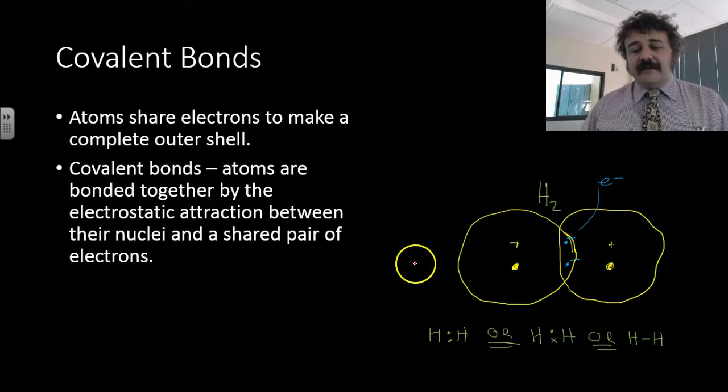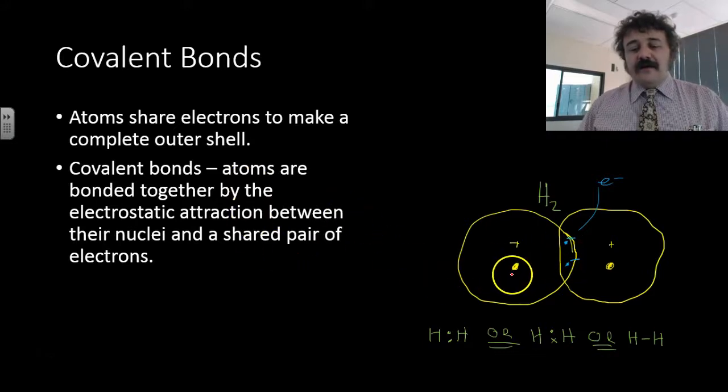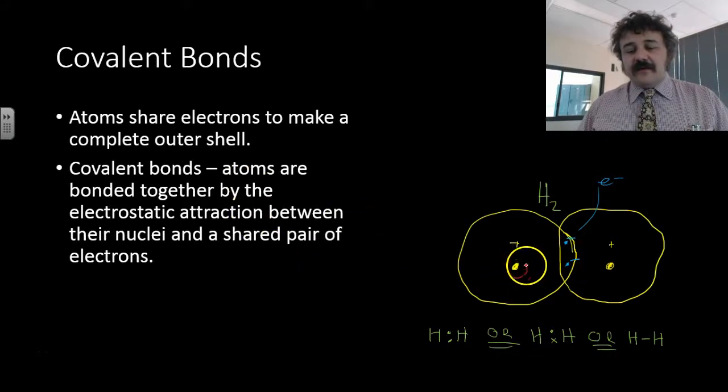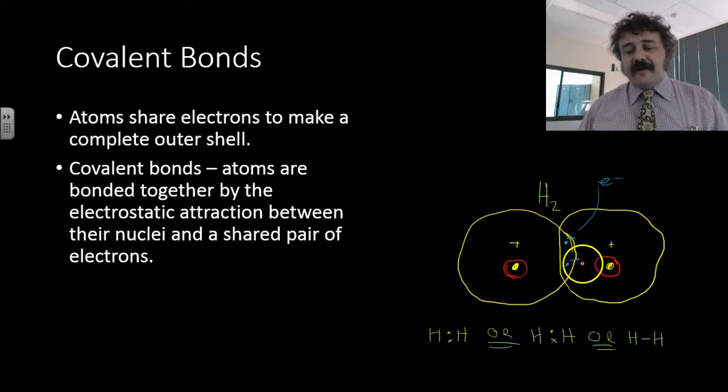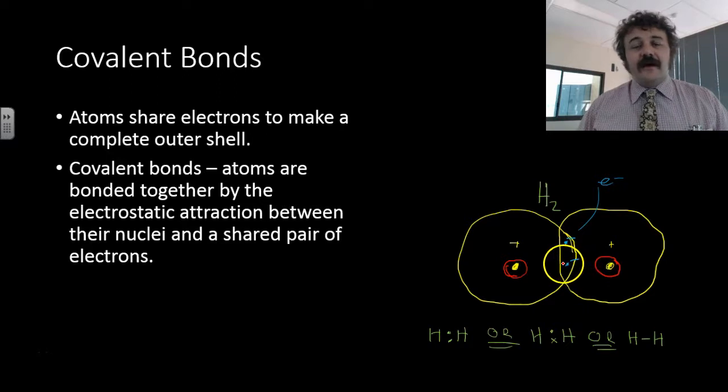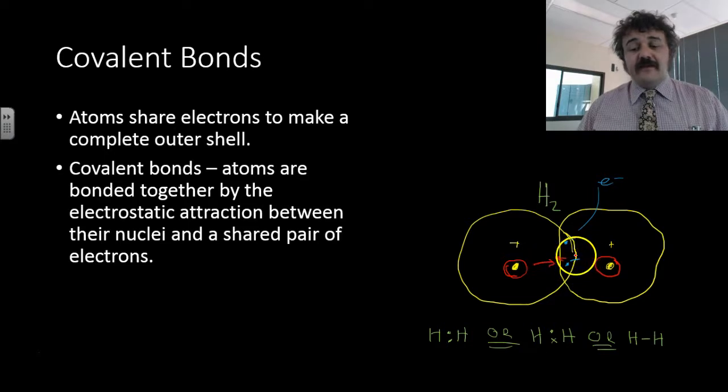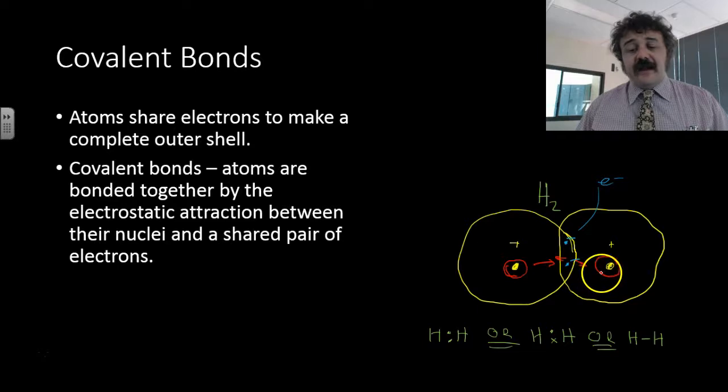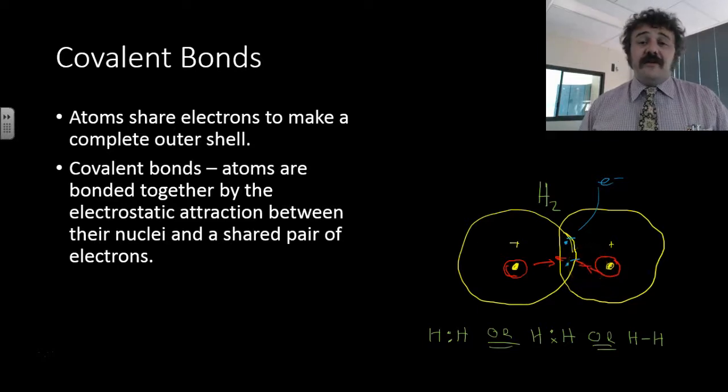The bond is the fact that you've got the positive nucleus here, another positive nucleus here, and they are attracted to the electrons in the middle. So there's this electron pair here which is being shared. This nucleus is attracted to it, these electrons are attracted to it, but these electrons are also attracted to this nucleus, and this nucleus is attracted to that. That's why covalent molecules are actually held together so tightly.